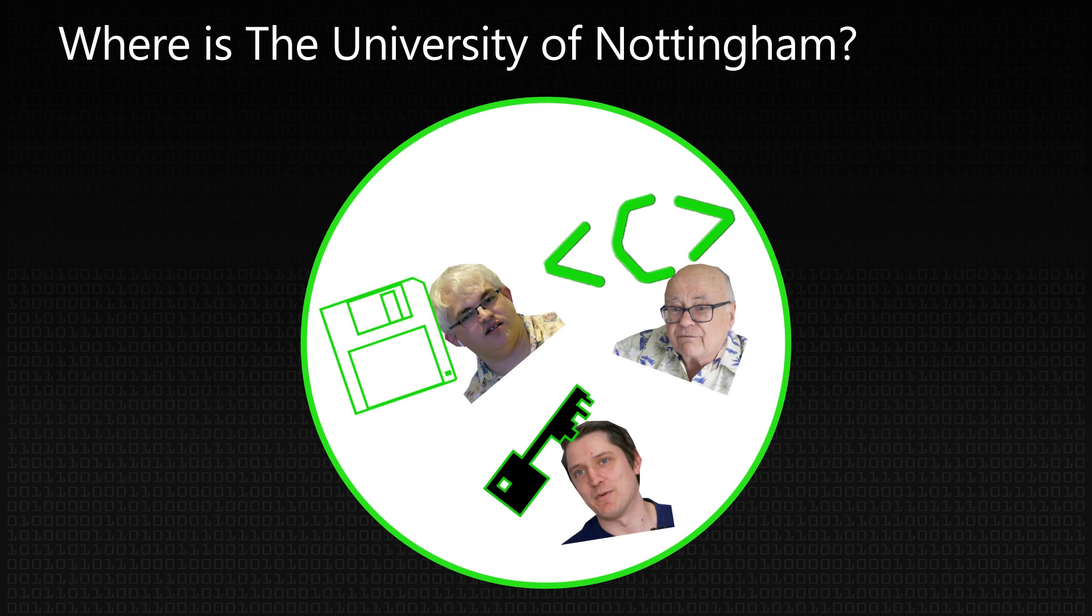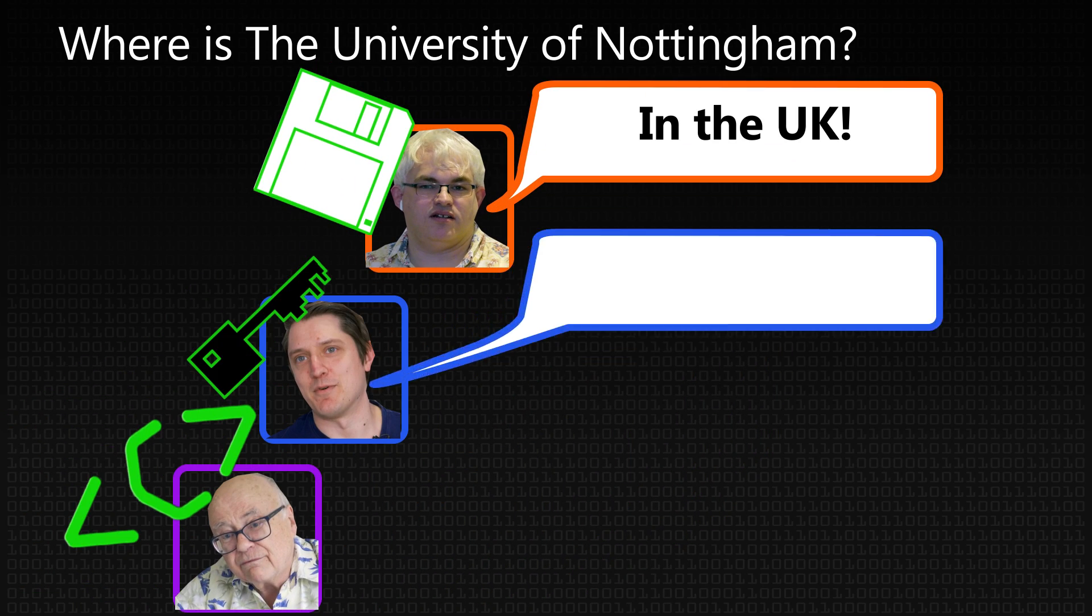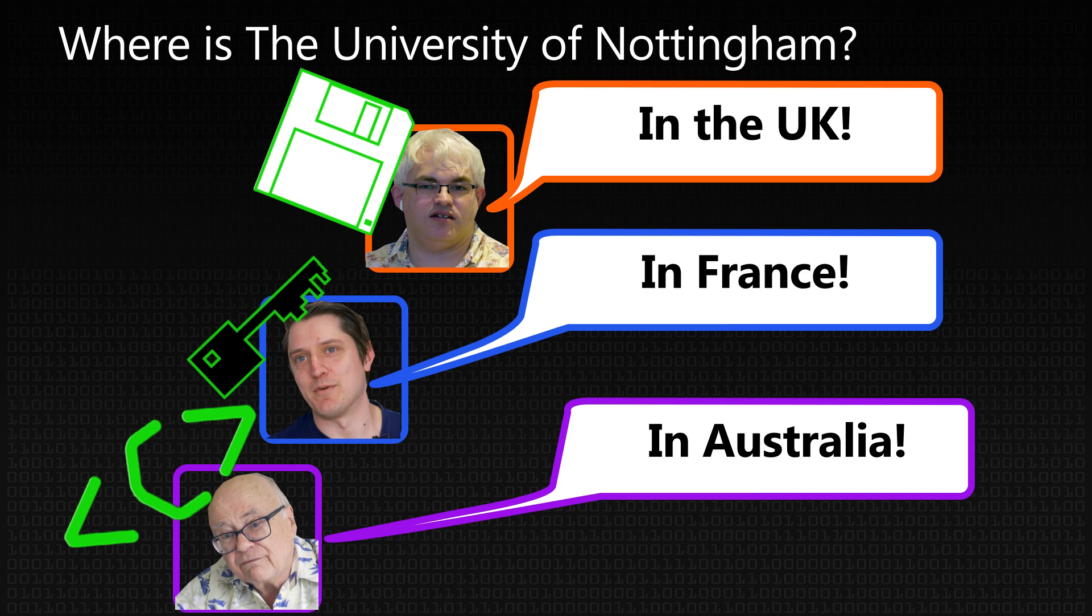So if we ask Steve, Mike and David, where is the University of Nottingham? And for example, Steve may say it's a university in the UK. And Mike may say it's a university in Paris, France. And David may say it's a university in Melbourne, Australia. How do you figure out who's telling the truth and who's lying?